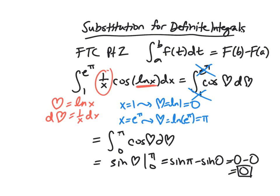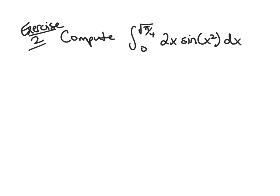One cool thing to note is that I never changed back to x. Once I do the integral with the new bounds, I don't need to go back to my original variable — I already have the new bounds and these are easy things to plug into sine. This is actually one of the nice things about substitution for definite integrals: it makes your computations easier. I'm no longer plugging e to the pi into the natural log, because I already did that when finding my new bounds. For your second exercise, compute the definite integral using the method of substitution, think about how your bounds should change, and then evaluate.